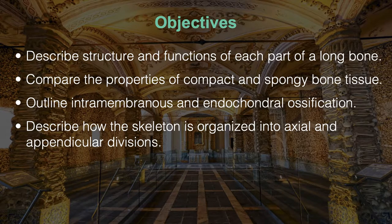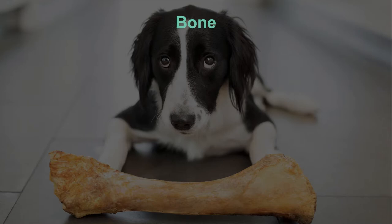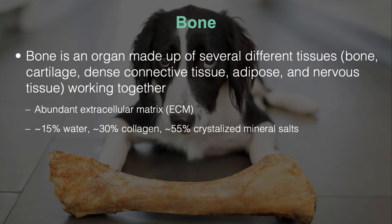Let's look at bone tissue specifically. Bone is not just calcified mineral salts — it also has dense connective tissue, adipose tissue, and nervous tissue. There's no muscular tissue in bone, but it is closely associated with muscles. So many different tissue types make it not as simple as you might think. Someone unfamiliar with bone might think it's just a tube of calcium, but that's not the case.